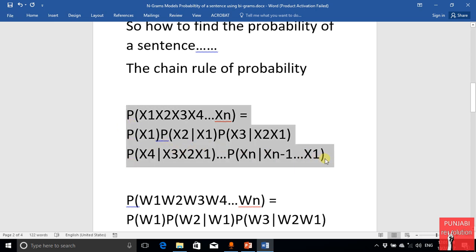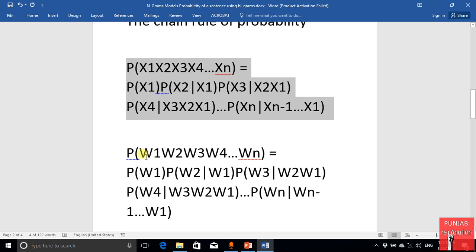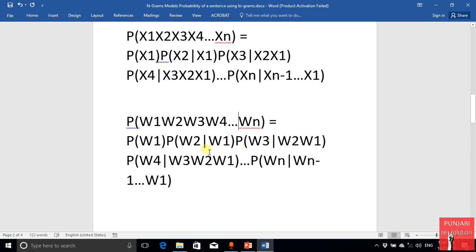And if we apply this chain rule on a sentence, then we can write it like this: these are the words of a sentence from W1 to Wn. And you can say the joint probability of all these words would be probability of word one into probability of word two given word one, probability of word three given word two and one, and so on.